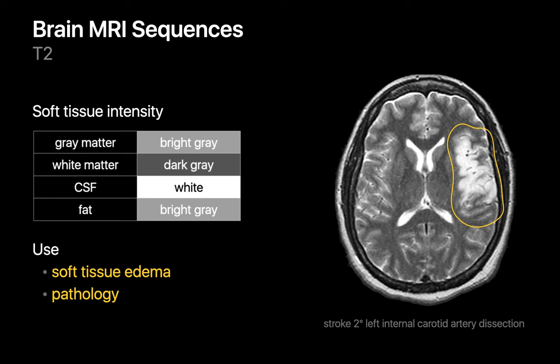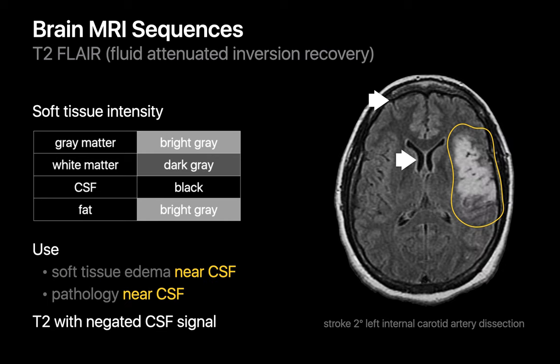Our third standard brain MR sequence is FLAIR imaging. FLAIR images are similar to T2-weighted images, except that free water molecules like the water molecules in CSF appear black instead of white. However, the signal of restricted water molecules, such as the water molecules in edema, is unaffected. In other words, FLAIR images are T2-weighted images with negated CSF signal. We use FLAIR imaging to assess for soft tissue edema and for pathology that may be near CSF.